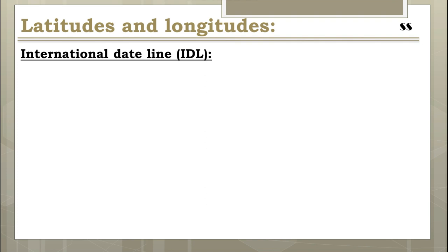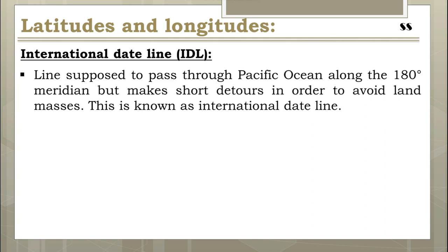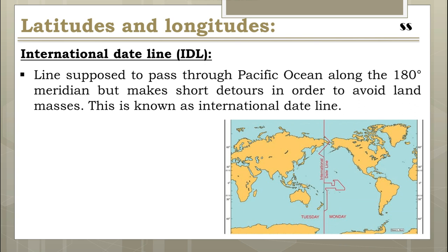The problem of time was solved first by standard time and then by zonal time, but circumnavigation of the world brought a new problem in keeping the correct date and day of the week for travelers. Therefore, a line passing through the 180-degree meridian — diametrically opposite to GMT — was adopted as the point where circumnavigators should make adjustments. This line is called the International Date Line. It passes through the Pacific Ocean along the 180-degree meridian but makes short detours to avoid land masses. When a ship crosses this line from west to east, it repeats a day; when crossing from east to west, it drops one day.